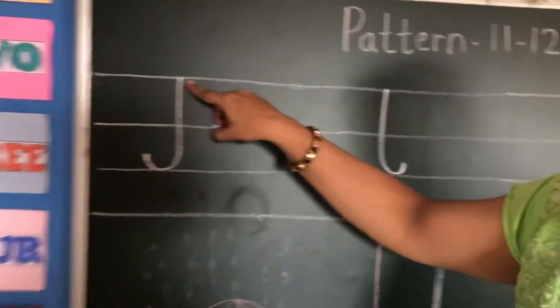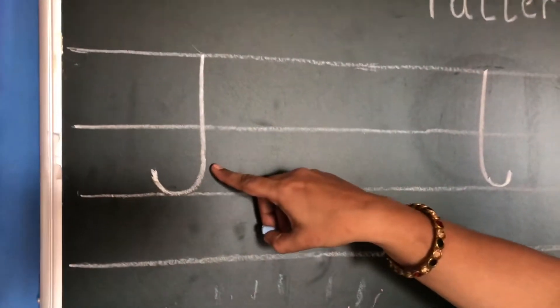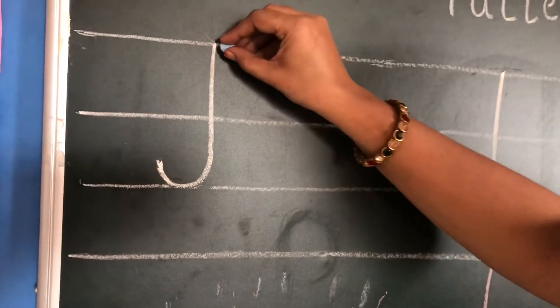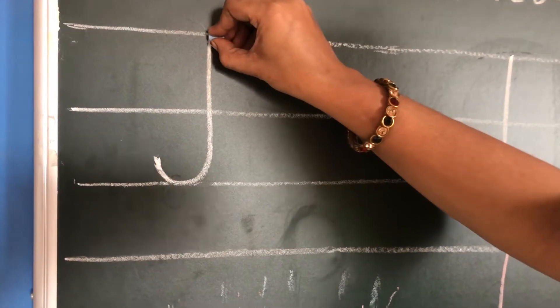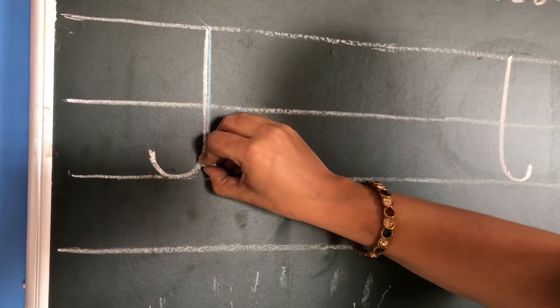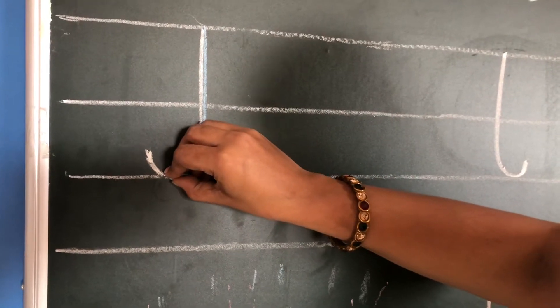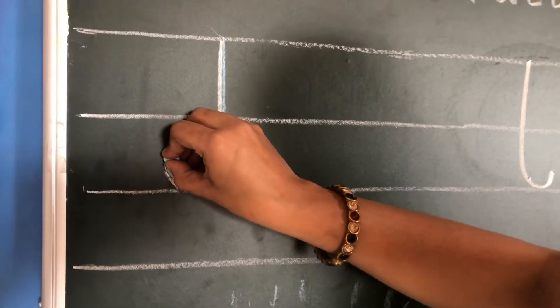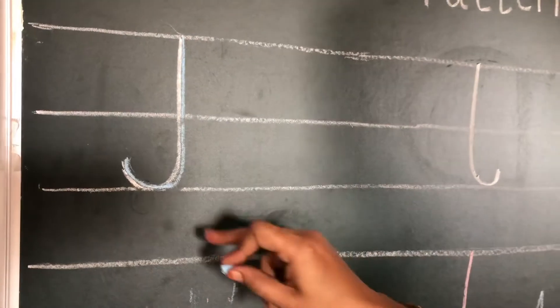See, this looks like a J. You must be knowing this. See how you have to draw it. You have to first draw a standing line, then it goes like a curve. It helps you to write the letter J.